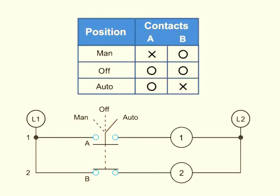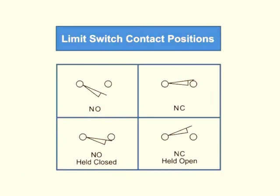Another type of switch used in electrical mechanics is the limit switch. A limit switch uses contact with an outside force or stationary object to physically open or close the switch.